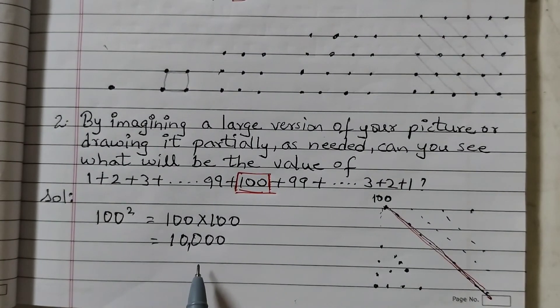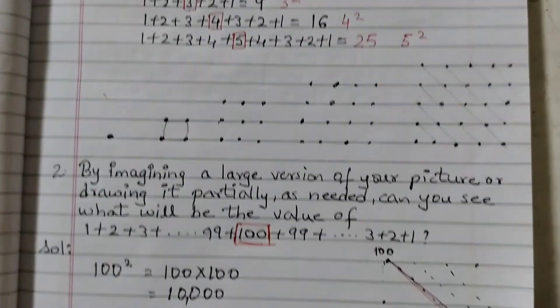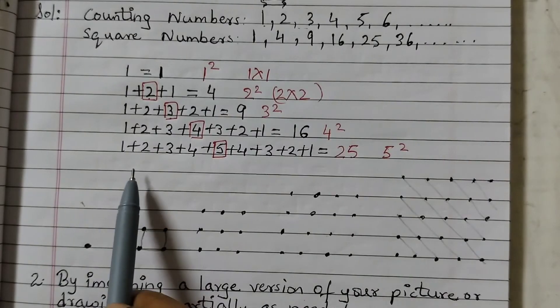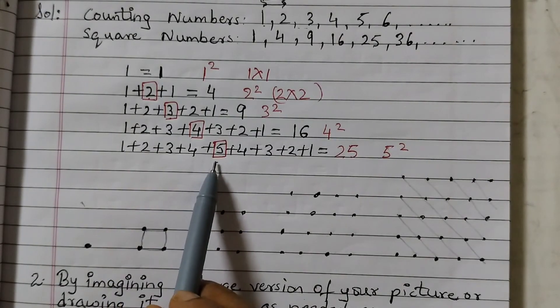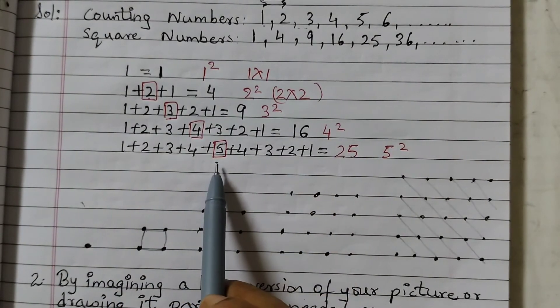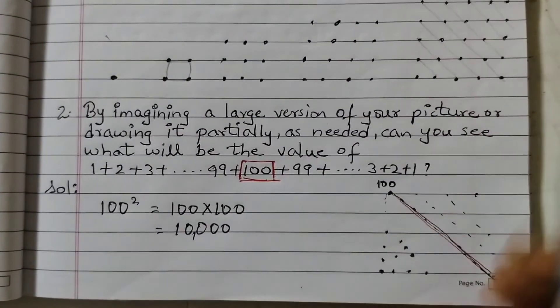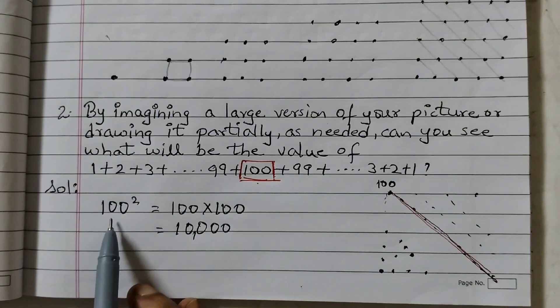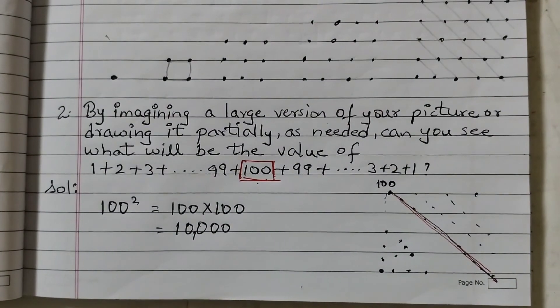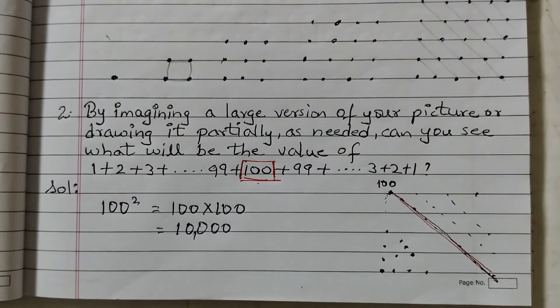And how we got this answer? This we got from question number 1 where we saw the relation between adding counting numbers up and down. We just need to take the middle term and square it. So same way we did it. This one also, middle term 100 squared it and got the answer. I hope the concept is clear to you. Thank you.